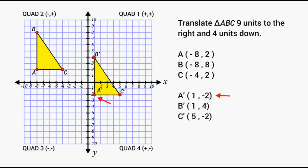Point A did end up at positive 1, negative 2 and point B did end up at positive 1, positive 4 and point C did end up on positive 5, negative 2. So we were able to successfully translate this triangle 9 units to the right and 4 units down.